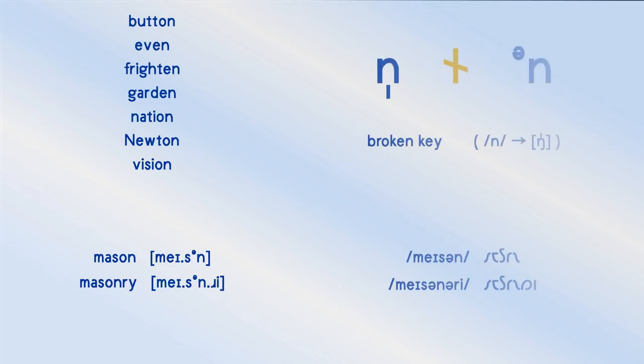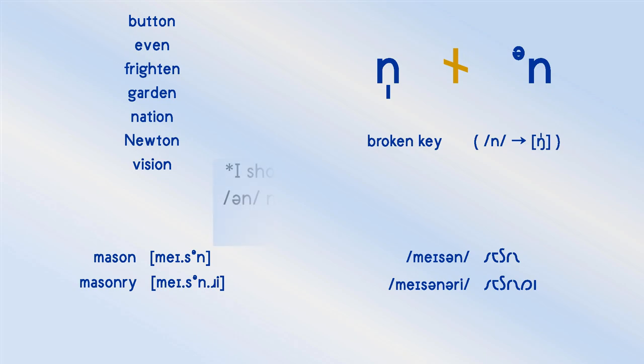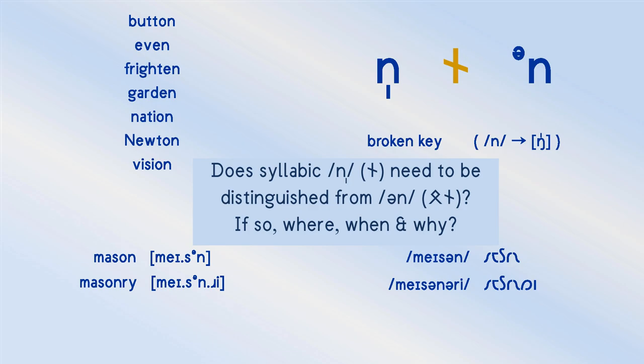The other nasal syllabic consonant is N, as in button, even, frighten, garden, nation, Newton, or vision. Now you may notice that in some of those cases, such as frighten or garden, the position of the syllable break may have changed. So for example, you may say frighten or garden rather than frighten and garden. Would that change whether you think this sound should be written just with the rune Need, or with Ethel-Need?